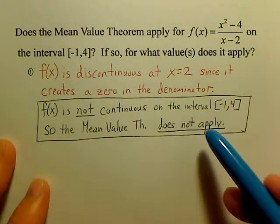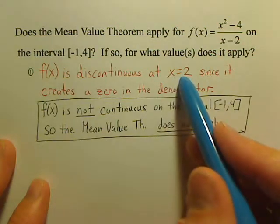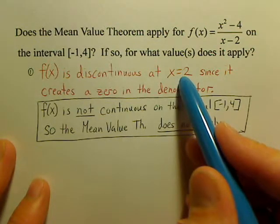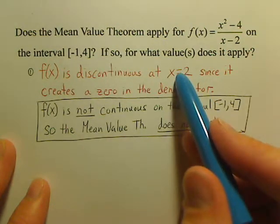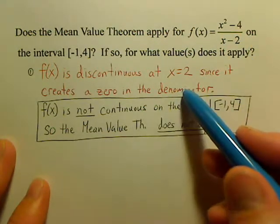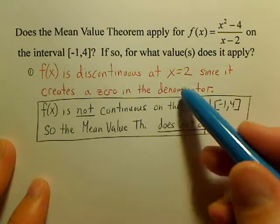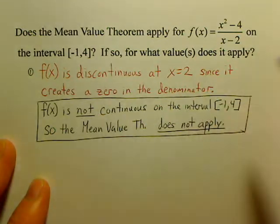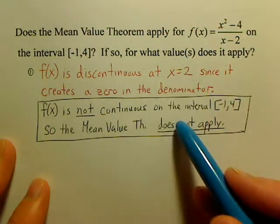Now, if it was continuous, let's say my interval did not include two. Let's say it's from three to four. Well, it's continuous on the interval, so then you check to make sure it's differentiable on the interval. If it is on the open interval, then you're good to go. Then you can apply it.